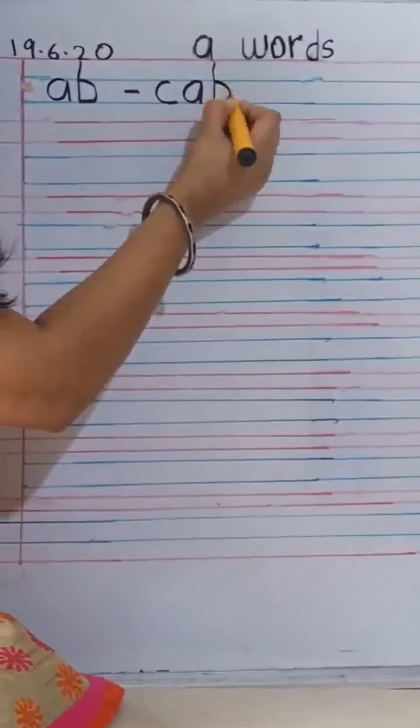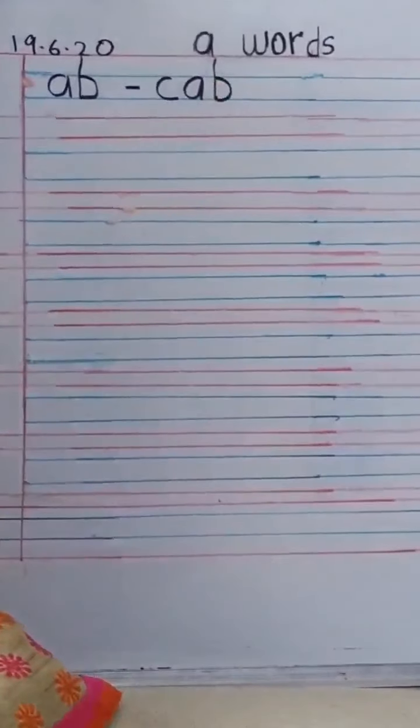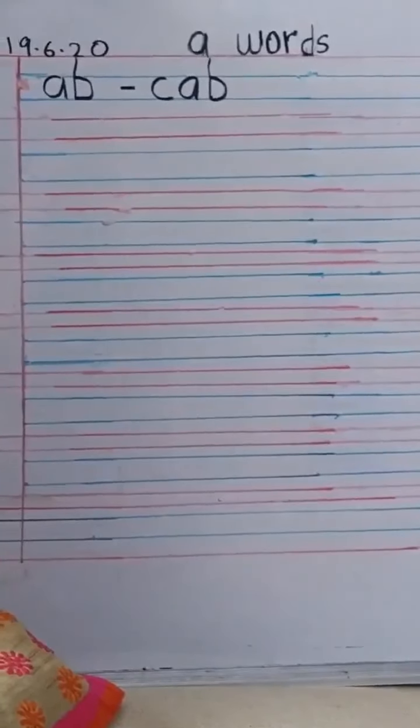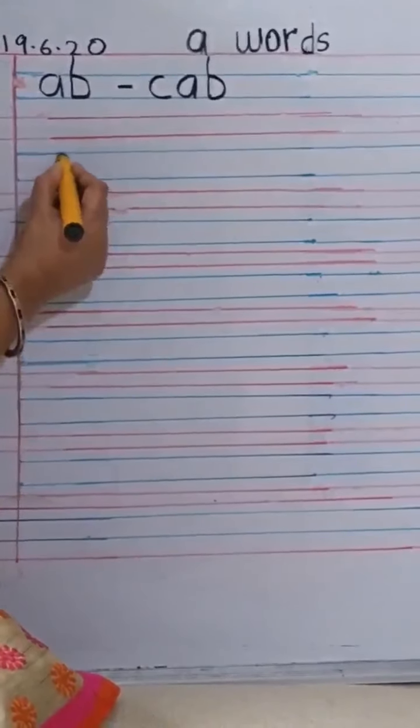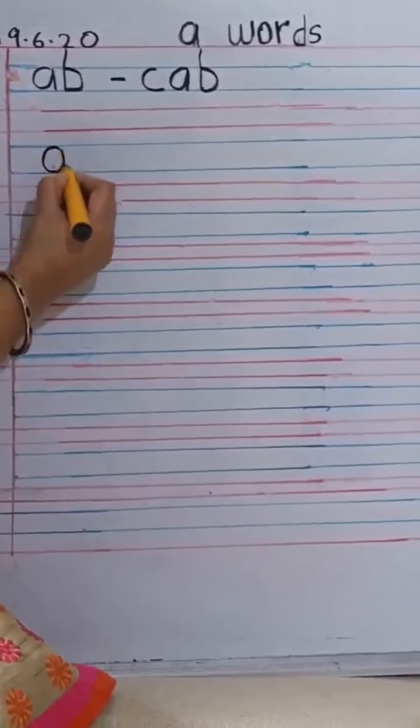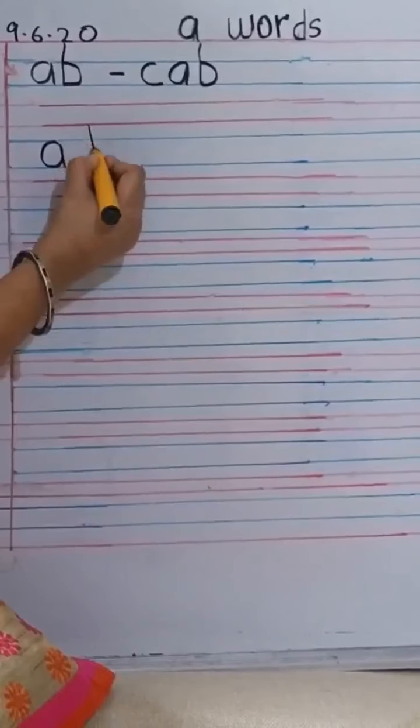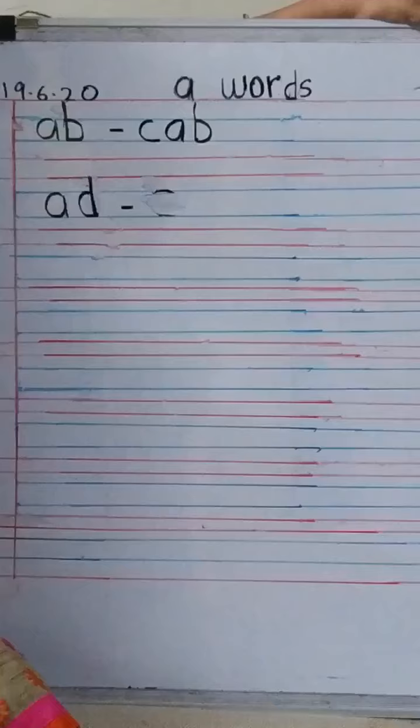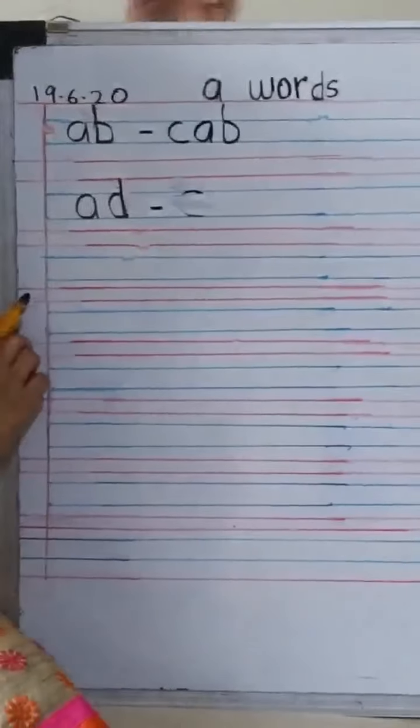So which is this word we have learnt just now? C, AB, CAB. Yes. Now we go to the next one. We write A and a D. B, AD. So now we will write BAD.